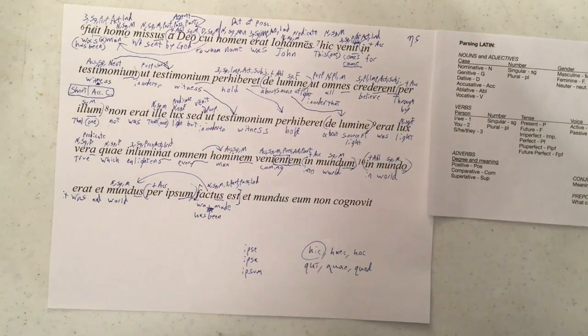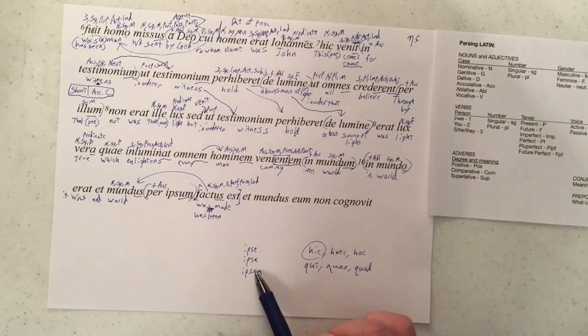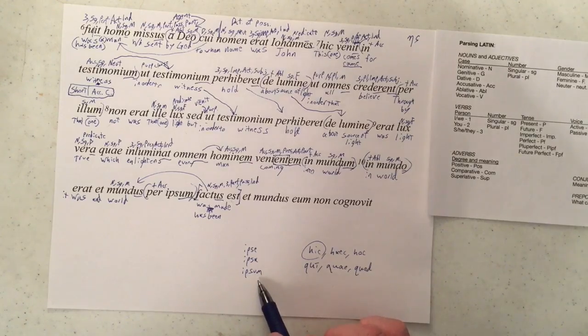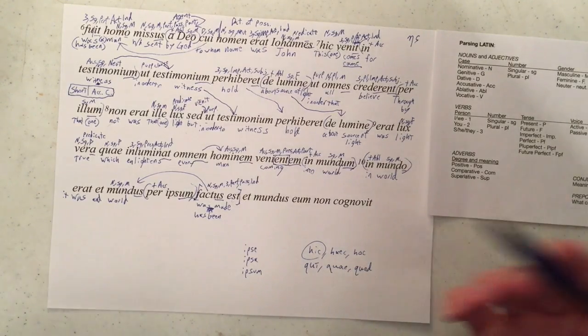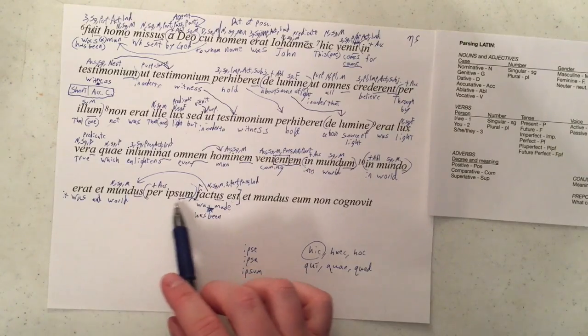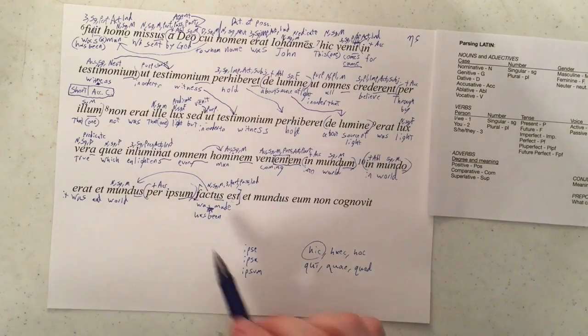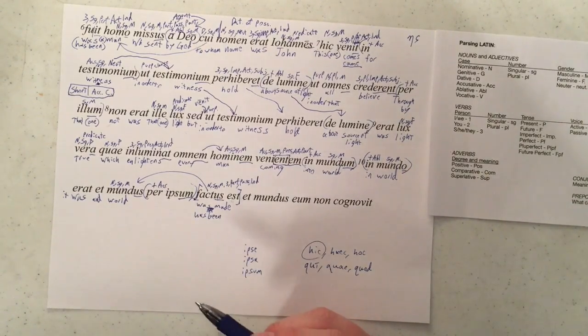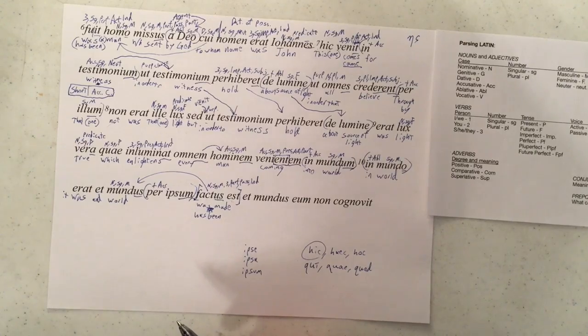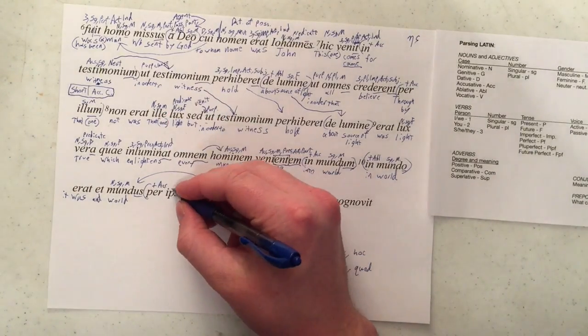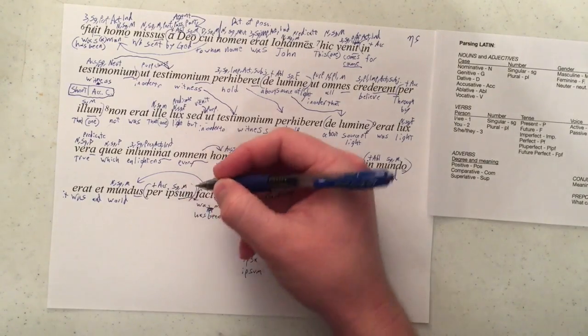So technically it could be neuter. But neuter what? In order to figure out which it is, neuter or masculine accusative, and the neuter accusative would be the same thing, we need the context of what's come before. And we've seen this in verses one through five, where we're just talking about the creation of everything. And per ipsum was used there. And it was referring to the word. And what was the word? Deo. Singular masculine.